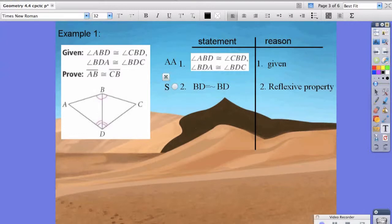Notice that the side falls in between the two angles. Therefore, we could say that triangle ABD is congruent to triangle BCD. And the reason why we know that is because of ASA. Notice that we prove the two triangles are congruent first.